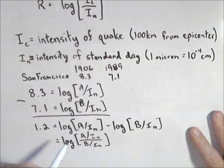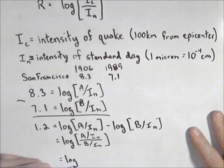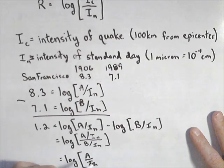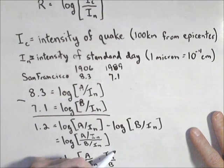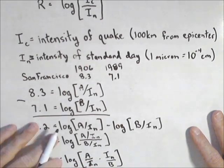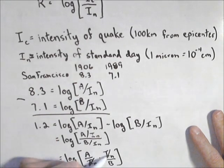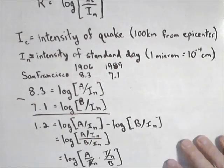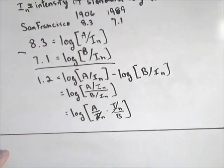Now I'm dividing by a fraction. So remember if that's the case what we do is we flip and we multiply. So I have A over I sub n times I sub n over B. This actually works out very nice because the I sub n's cancel.